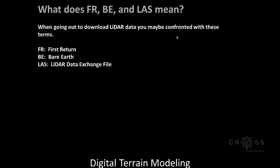When you go to download LIDAR, you may see the terms FR, BE, and LAS. FR stands for First Return, BE stands for Bare Earth, and LAS means LIDAR Data Exchange Files. I'm going to explain more about how this data is collected so you can begin to understand what these terms mean.